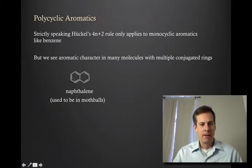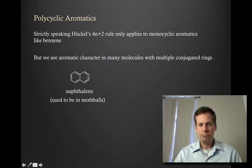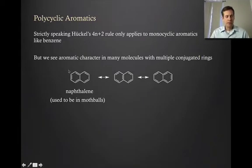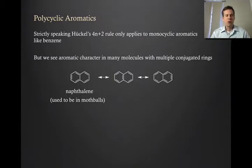As you can see, naphthalene sort of looks like two benzene rings fused together. And if we think about resonance forms for naphthalene, we could actually draw three different resonance forms by shifting these double bonds around. This reminds us of what we saw with benzene, where we've got a lot of different resonance forms, which we equate with stability.